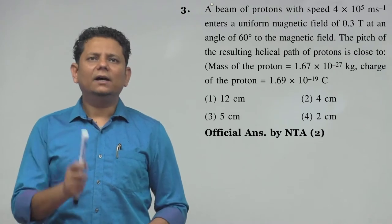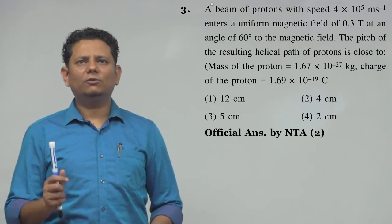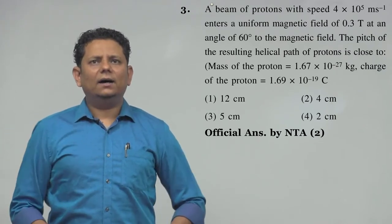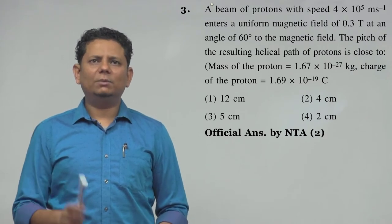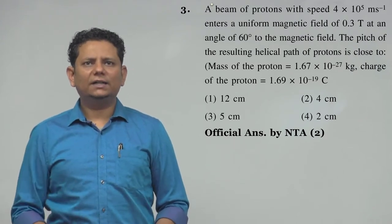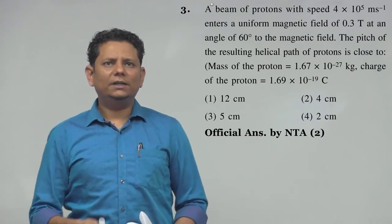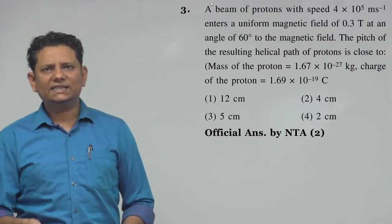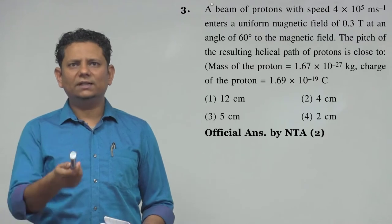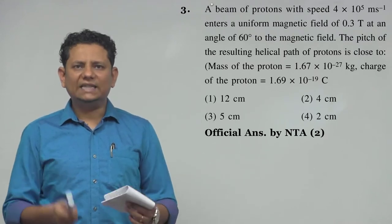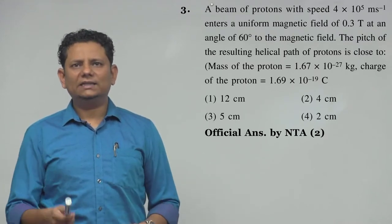The question says a beam of protons with speed 4×10⁵ m/s enters a uniform magnetic field of 0.3 Tesla at an angle of 60 degrees to the magnetic field. The pitch of the resulting helical path of protons is close to - we have given the mass of proton is 1.67×10⁻²⁷ kg, and charge is 1.69×10⁻¹⁹ coulombs.